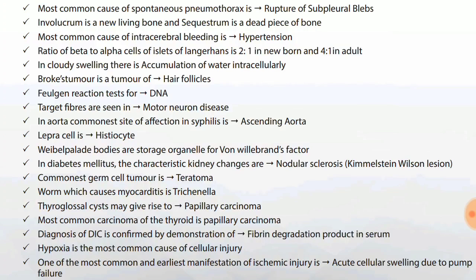Brogue's tumor is a tumor of hair follicles. Feulgen reaction is a test for DNA. Target fibers are seen in motor neuron disease. In the aorta, the commonest site of affection in syphilis is the ascending aorta. Lepra cell is a histiocyte.